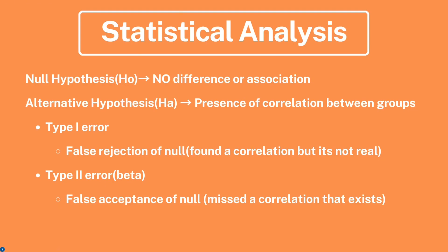For the alternative hypothesis, you have two types of error. Type 1 error is a false rejection of the null — you found a correlation but it's not real. Type 2 error, noted as beta, is a false acceptance of the null, meaning you missed a correlation that actually exists.